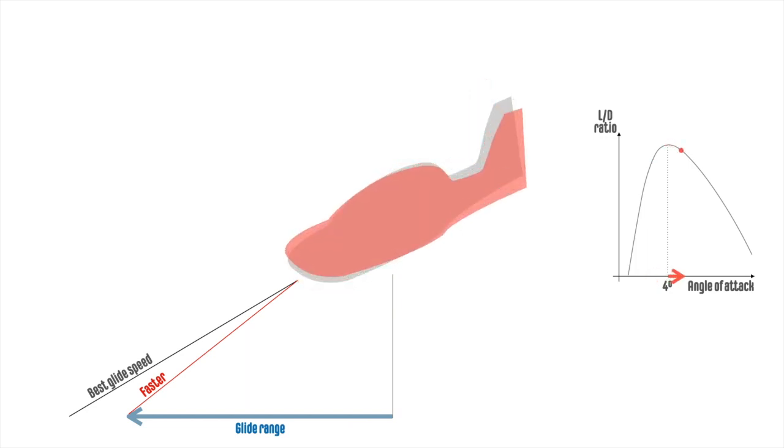Should the glide speed decrease, the angle of attack will increase. The lift to drag ratio will also reduce, and consequently the glide range will be even shorter.